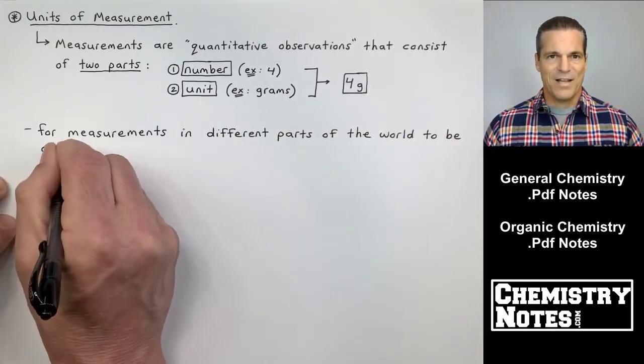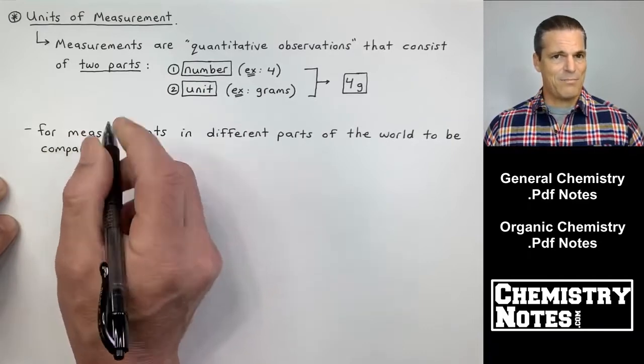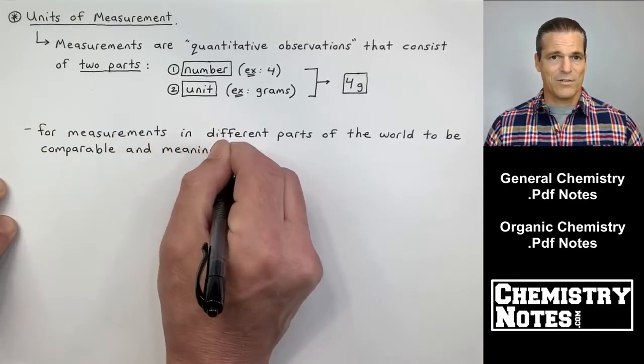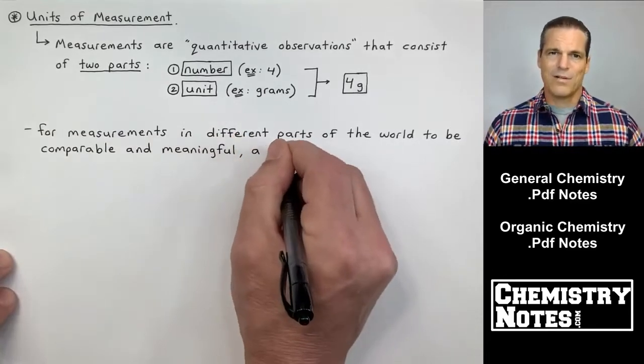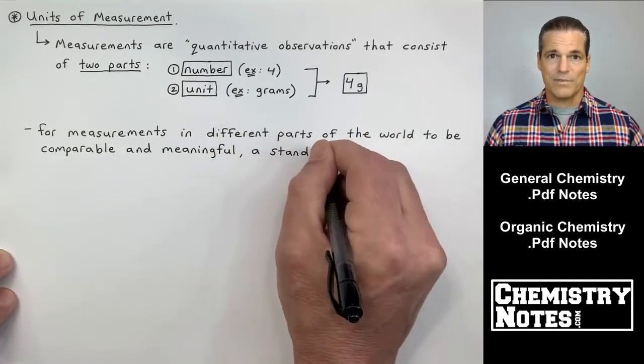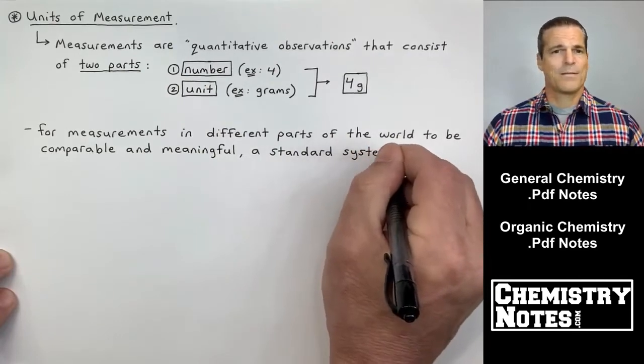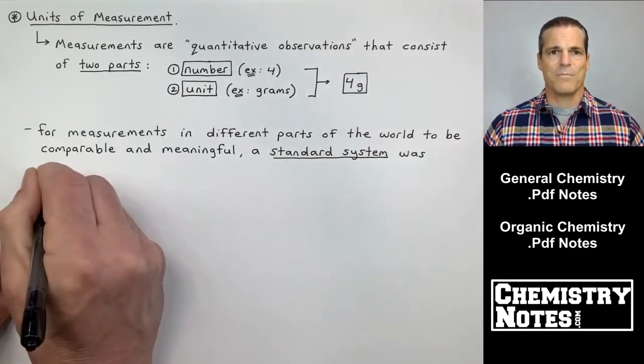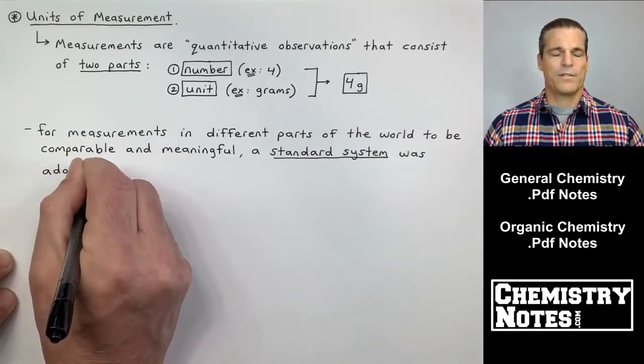Now believe it or not, the unit is actually more important than the number because the unit kind of dials in a little closer than just a plain old number about where you are at. So grams will be more important than the four. A lot of people leave off units. You have to include your units in every measurement.